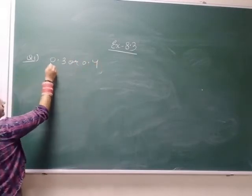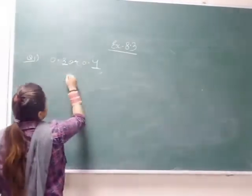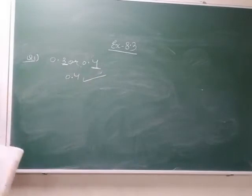Which is greater? 0 and 0 are the same. 3 or 4? 4 is greater, so 0.4 is greater. Clear?